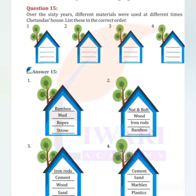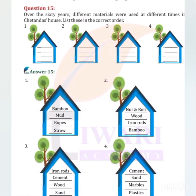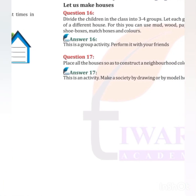Over 60 years, different materials were used at different times in Chetanda's house. List these in correct order: bamboo, mud, rope, straw, nut and bolt, wood, iron rod, bamboo, iron rod, cement, wood, sand, cement, sand, marble, plastics.